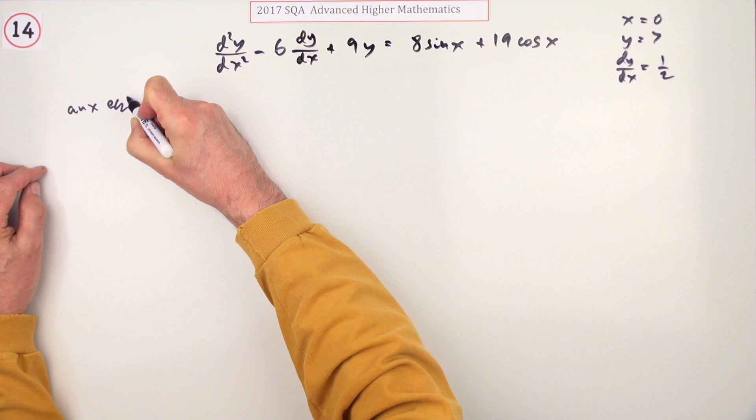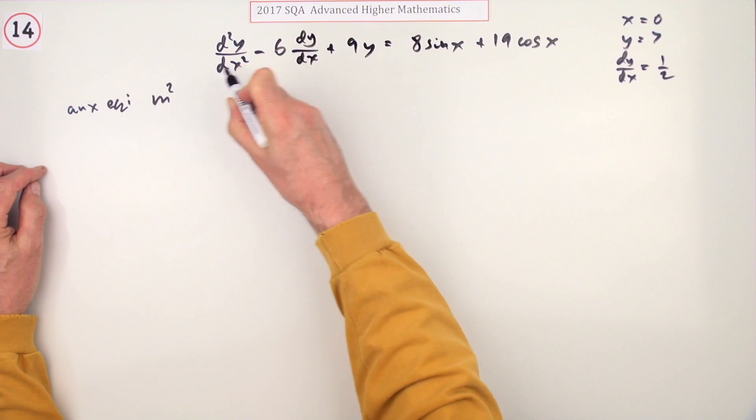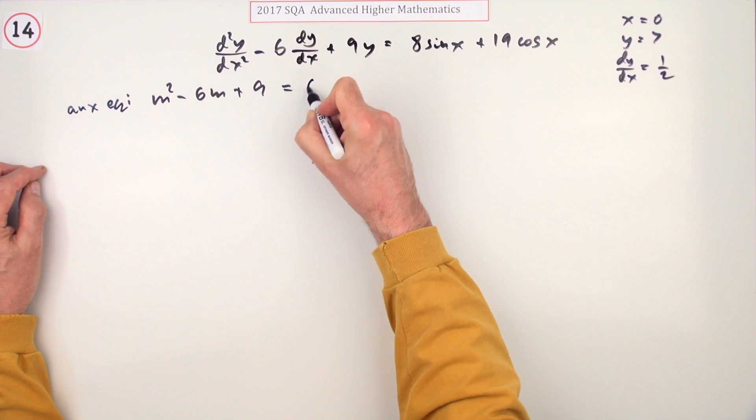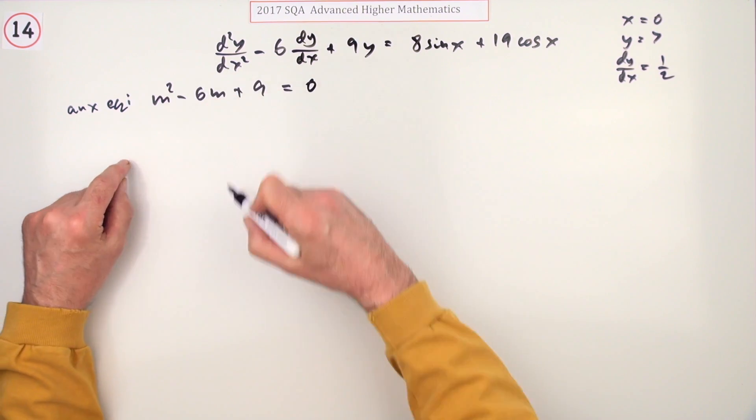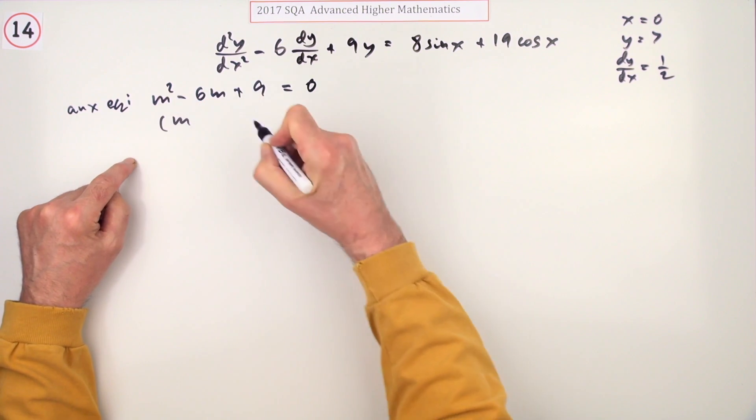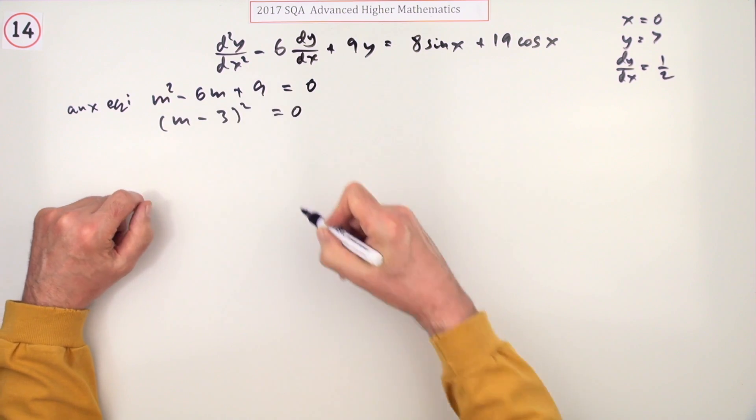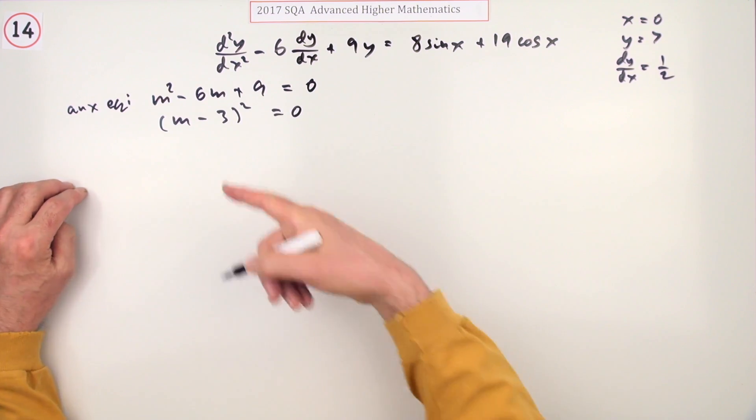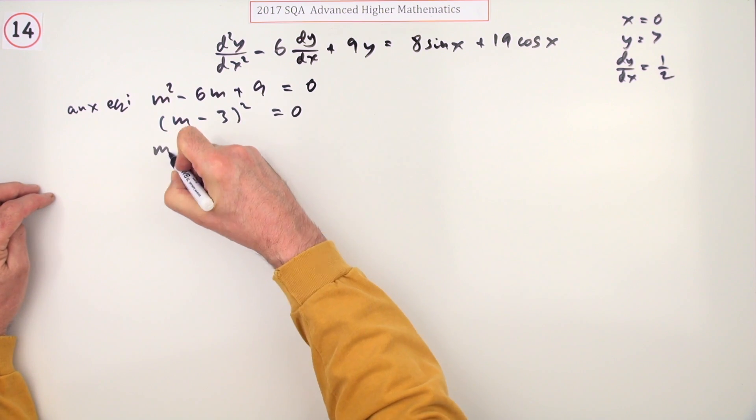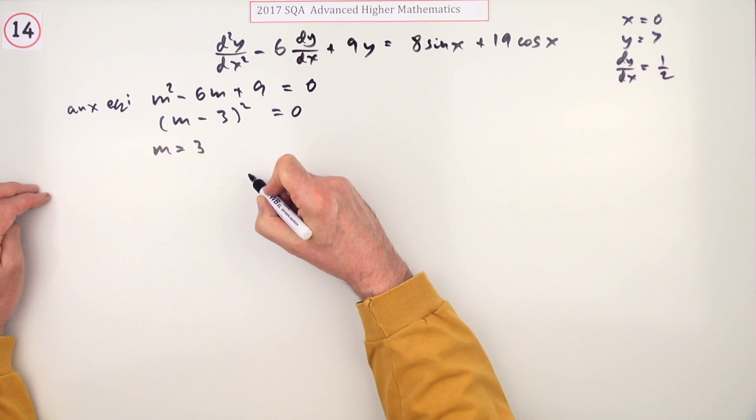First, what do we have for the auxiliary equation? Taking the coefficients: m squared minus 6m plus 9 equals 0. That's a perfect square, which isn't fine in a sense because that goes down to m minus 3 squared equals 0. The important bit is you've got a repeated root, m equals 3.